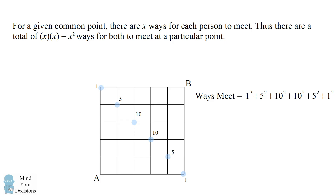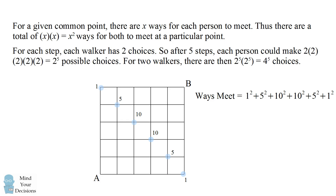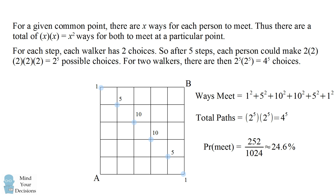We also need to know how many different ways there are for them to meet at all. At each step, each walker has two different choices — up or right, or down or left. So after five steps, each person could make 2^5 possible choices. For two walkers, that's 2^5 times 2^5, which equals 4^5 total choices. So the probability is the number of successes divided by total paths, which equals 252 divided by 1024, approximately 24.6%.